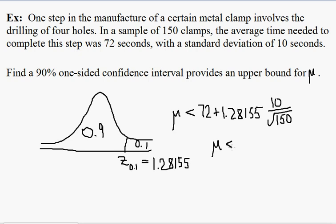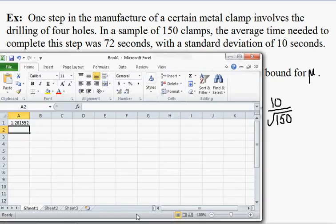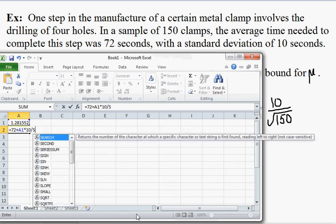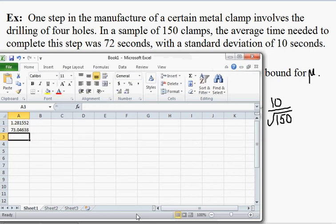And so finally we get mu is less than, and let's do that calculation. We get equal 72 plus the number we just got, times 10 over the square root of 150, 73.046.